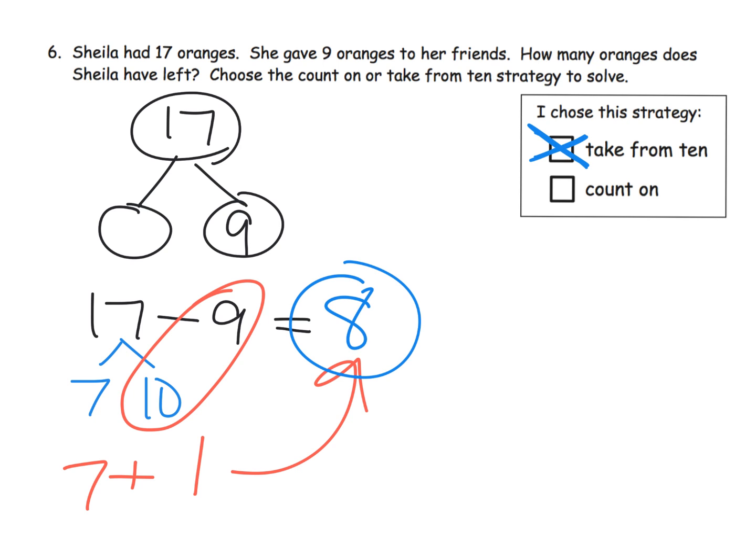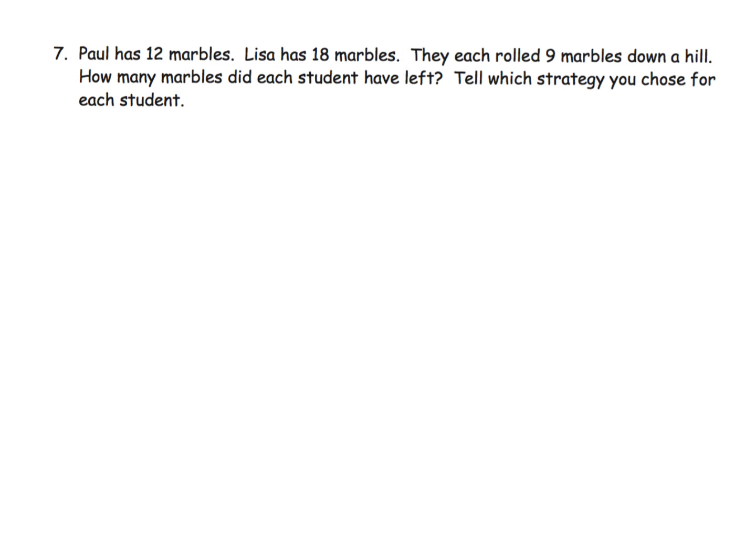Another example: Paul has 12 marbles and Lisa has 18 marbles, and they each rolled 9 marbles down a hill. How many marbles did each student have left? So we've got 12 minus 9 for Paul, and we've got Lisa as 18 minus 9.